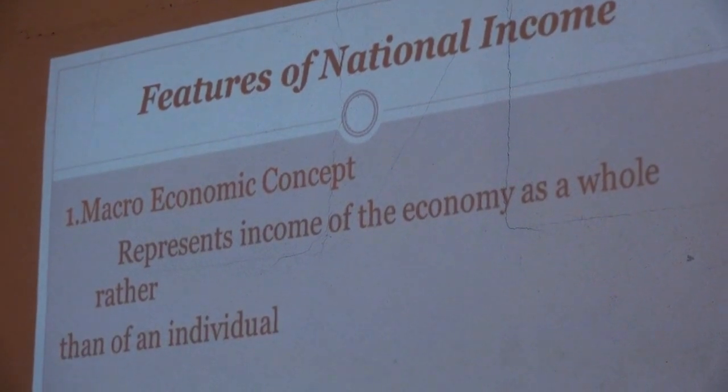Now we come to the features of national income. The first feature is that it is a macroeconomic concept. In 1933, economics was divided into two parts — microeconomics and macroeconomics. National income is a macroeconomic concept because in national income we study all economic activities happening in the country. When we study only one individual, it is a microeconomic concept; but when we study the total nation, it is a macroeconomic concept — and national income covers the total nation.